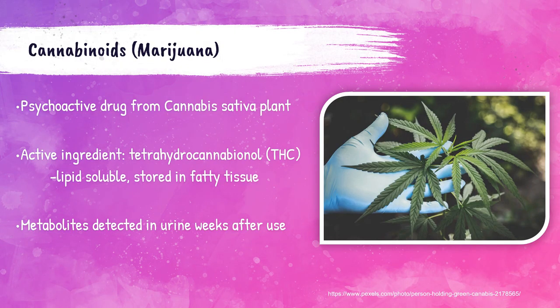Marijuana is a psychoactive drug derived from the cannabis sativa plant. The active ingredient is tetrahydrocannabinol, or THC. THC is soluble in lipids and is stored within fatty tissue. The metabolites of THC can be detected in a patient's urine weeks after drug use.